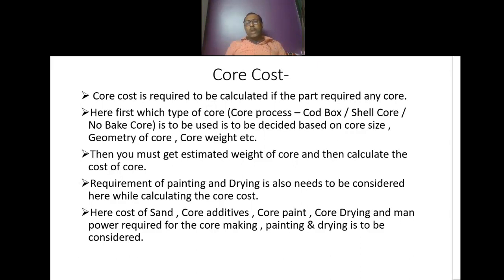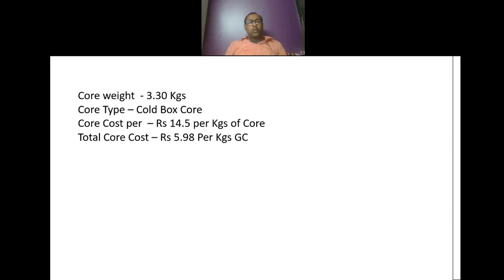The cost of sand, core additives, core paint, and core drying, as well as the manpower required for core making, painting, and drying, has to be considered in the core cost. For this casting, core weight is 3.3 kg, core type is cold box core, and core cost per kg of core is Rs 14.5. So the total core cost comes out to be Rs 5.98 per kg of good casting.